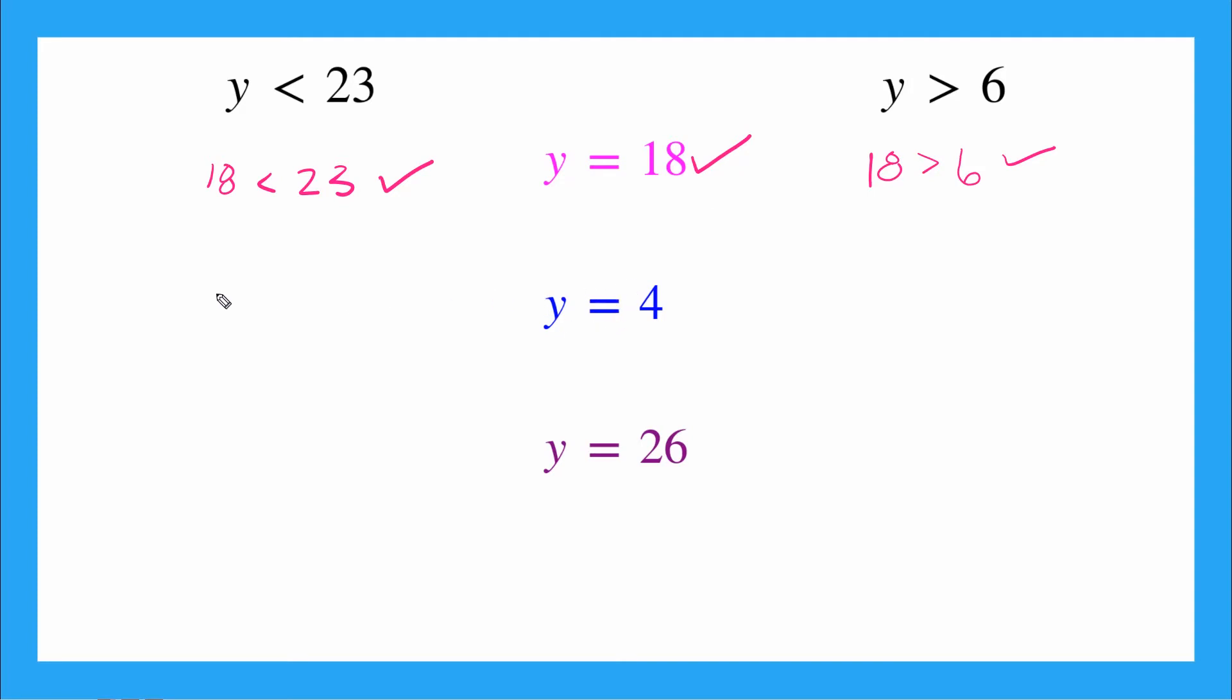Now let's try y equals 4. Is 4 less than 23? Yep, that's true. How about over here? Is 4 greater than 6? Oh, I don't think so. 4 is less than 6. So this is not a solution for this inequality. And since we're looking for solutions to both inequalities, that means y equals 4 does not count as a solution here.